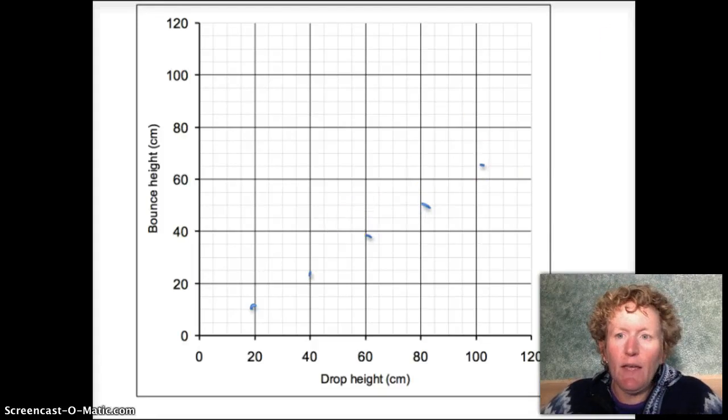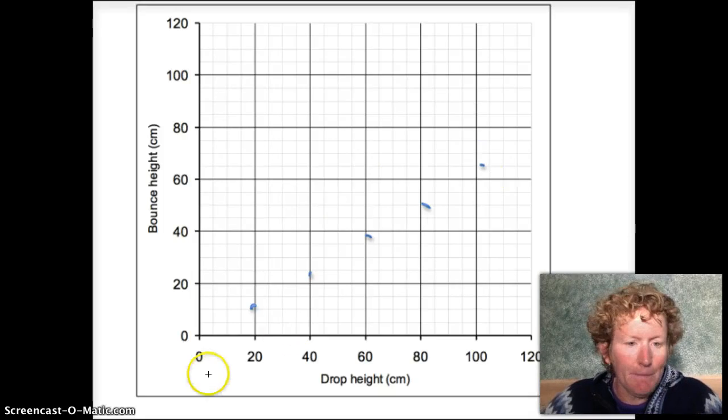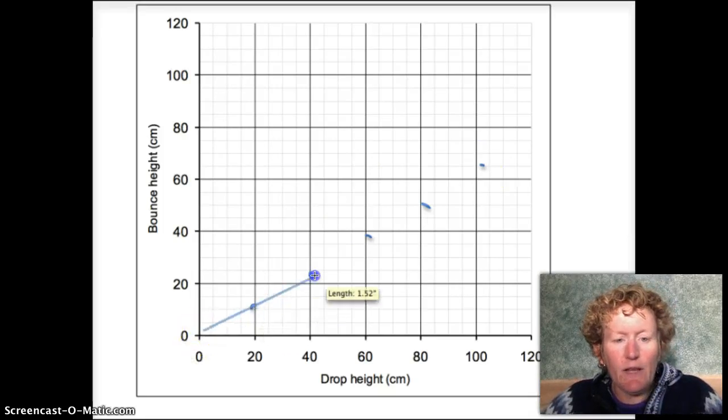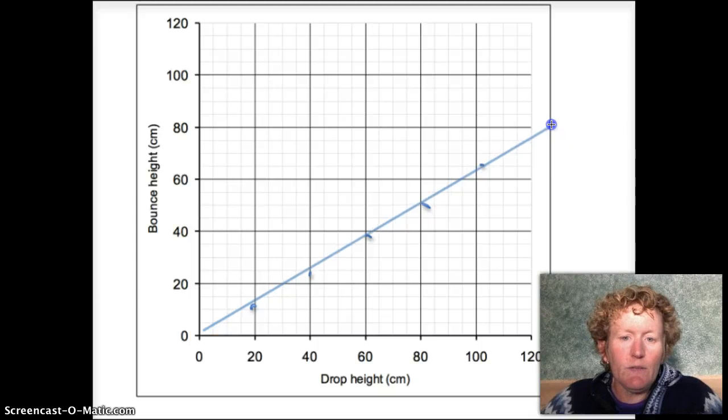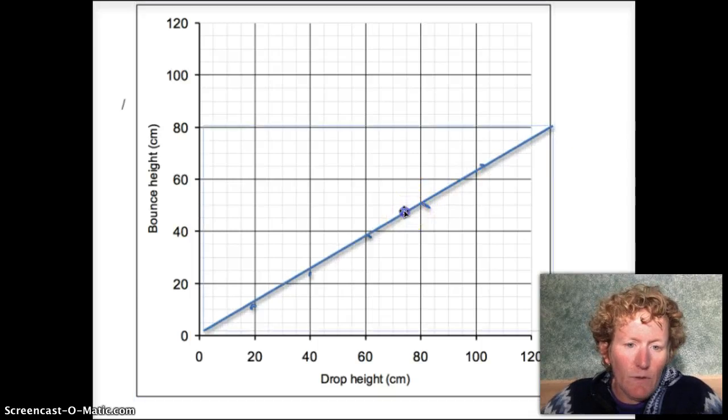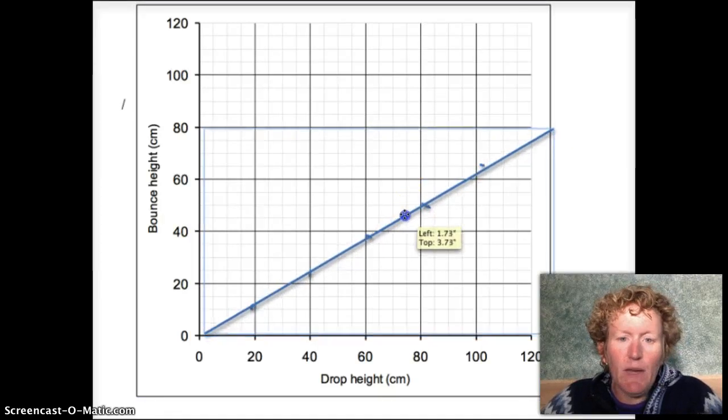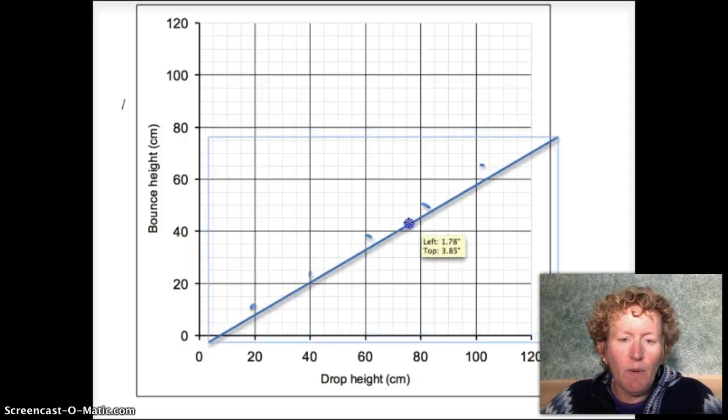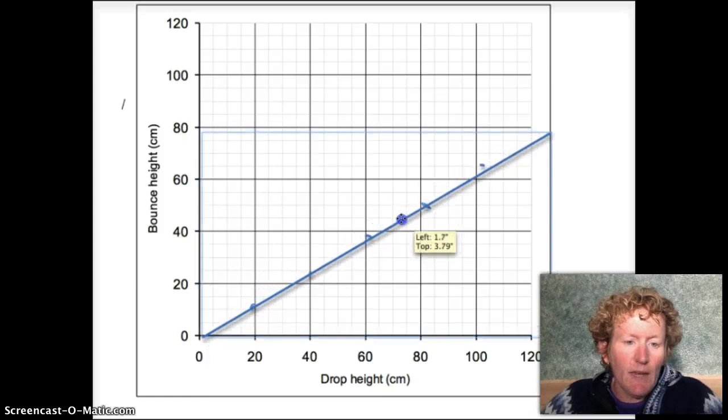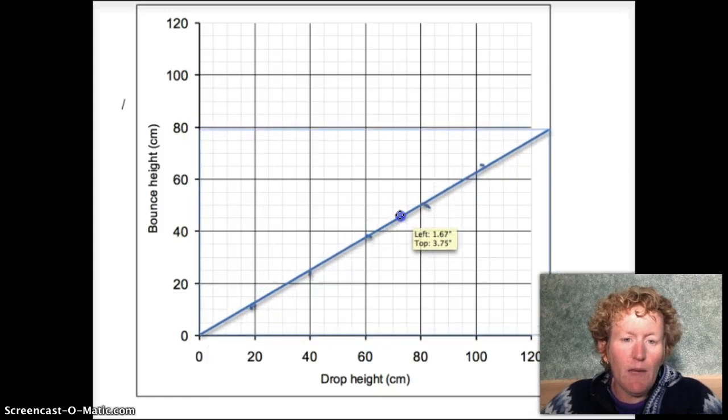So now we want to draw a trend line. I'm going to go up to the shapes menu. I'm going to grab a line. And I'm going to draw a trend line. Now you don't have to draw a trend line for the golf ball, but I'm just showing you what a trend line is. And notice my trend line here. It goes through, it tries to touch as many points as it can. It's not above most of the points or below most of the points. It tries to go through as many points as possible.